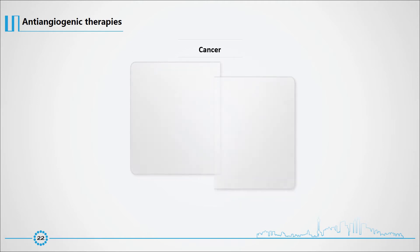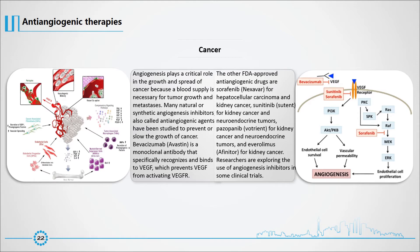Angiogenesis plays a critical role in the growth and spread of cancer because a blood supply is necessary for tumor growth and metastases. Many natural or synthetic angiogenesis inhibitors, also called antiangiogenic agents, have been studied to prevent or slow the growth of cancer. Bevacizumab (Avastin) is a monoclonal antibody that specifically recognizes and binds to VEGF, preventing VEGF from activating its receptors. Other FDA-approved antiangiogenic drugs include sorafenib (Nexavar) for hepatocellular carcinoma and kidney cancer; sunitinib (Sutent) for kidney cancer and neuroendocrine tumors; pazopanib (Votrient) for kidney cancer and neuroendocrine tumors; and everolimus (Afinitor) for kidney cancer. Researchers are exploring the use of angiogenesis inhibitors in additional clinical trials.